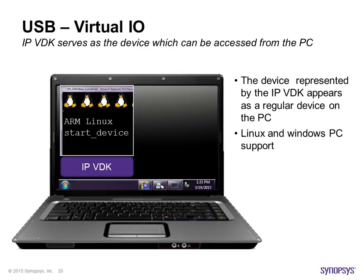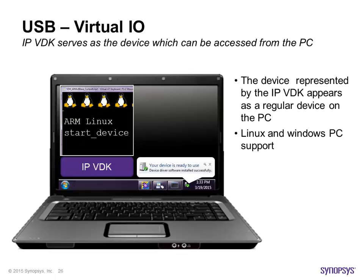The other kind of I/O our USB model supports is called Virtual I/O, and here it's exactly the other way around. In this case, the VDK serves as the device which can then be accessed from the PC on which we are running the VDK. So when we start our embedded ARM Linux on the VDK, we need to launch the respective gadget, such as a mass storage or serial device gadget, and the host machine then recognizes that there is a new device ready to use.